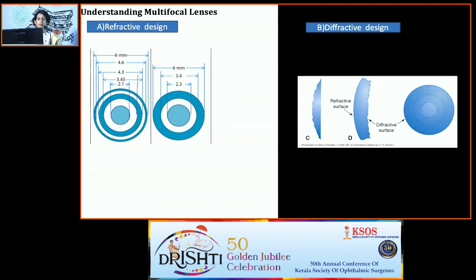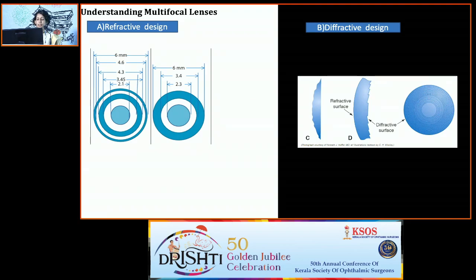In the refractive design, there is an annular zone of near addition, but the disadvantage is that it is pupil-dependent. In the diffractive design, multiple concentric rings provide both distance and near visual acuity, but there is a loss of contrast sensitivity.